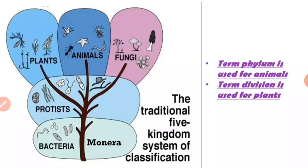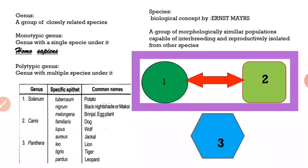Kingdom Protista is a kingdom which shares common boundaries with all other kingdoms. On the lower side, Protista shares a common boundary with Monera, and on the upper side it shares a common boundary with kingdoms Plantae, Animalia, and Fungi. Moving on to genus — genus is a group of closely related species, representing a taxonomic category higher than species.